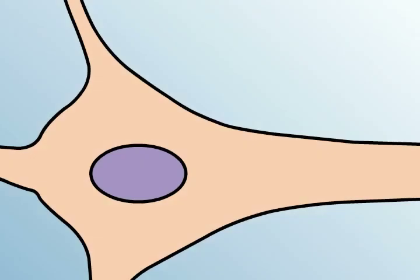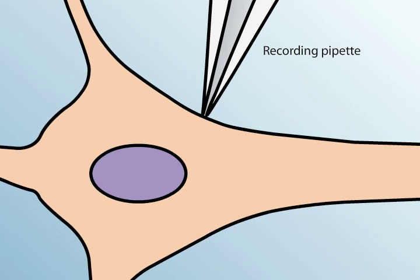The patch clamp method is used to study the properties of a small patch of membrane. In this technique, a glass pipette with a very small opening is used to make tight contact with a tiny area or patch of neuronal membrane.